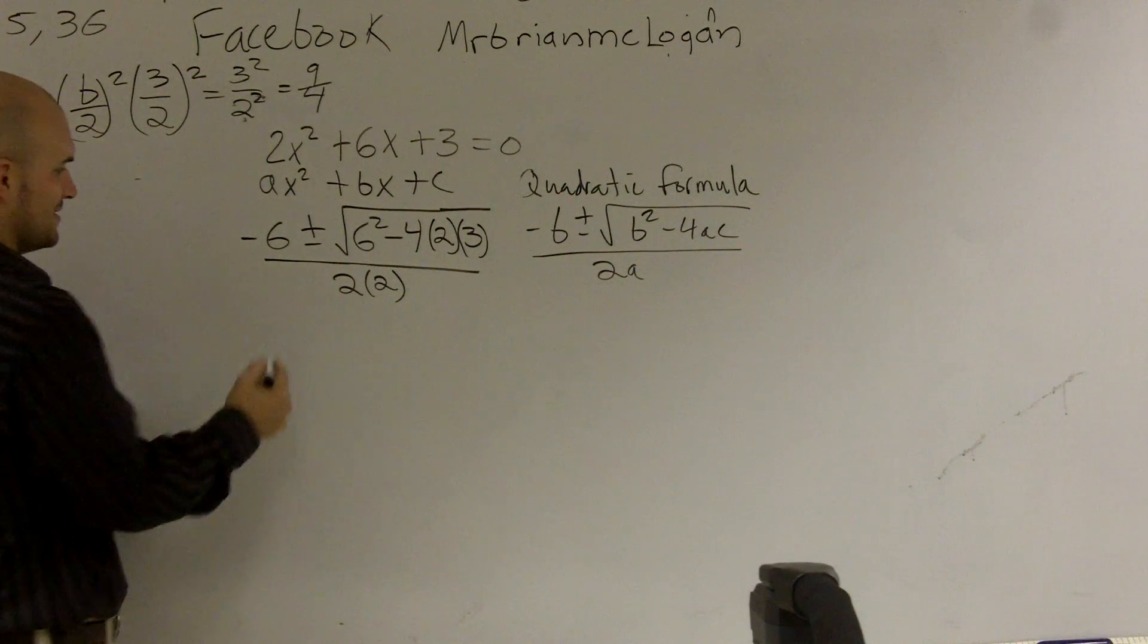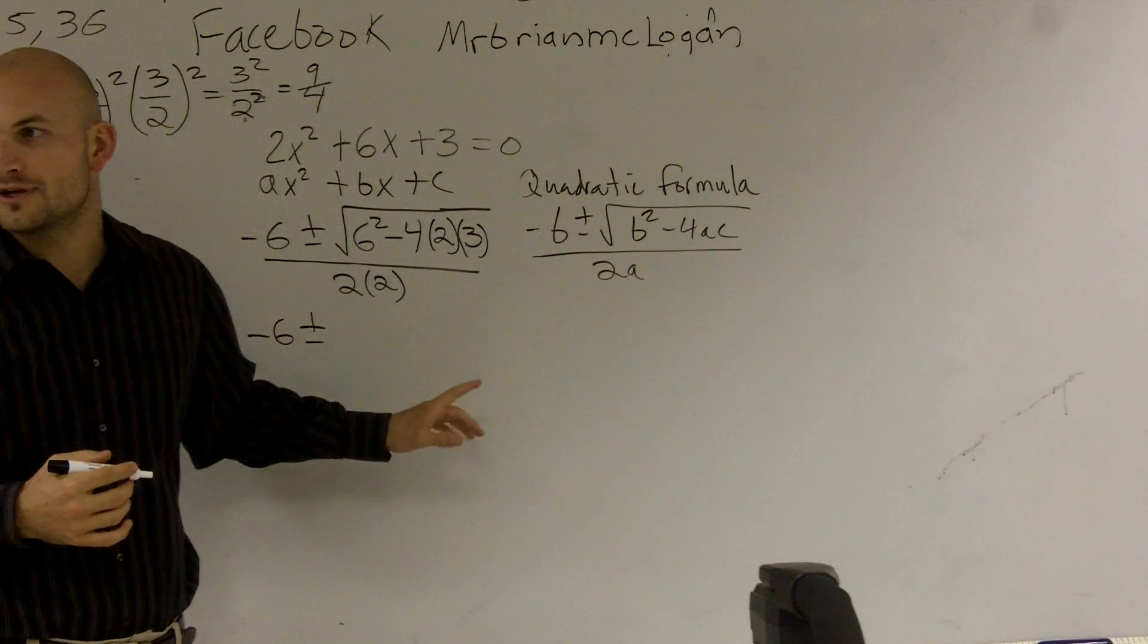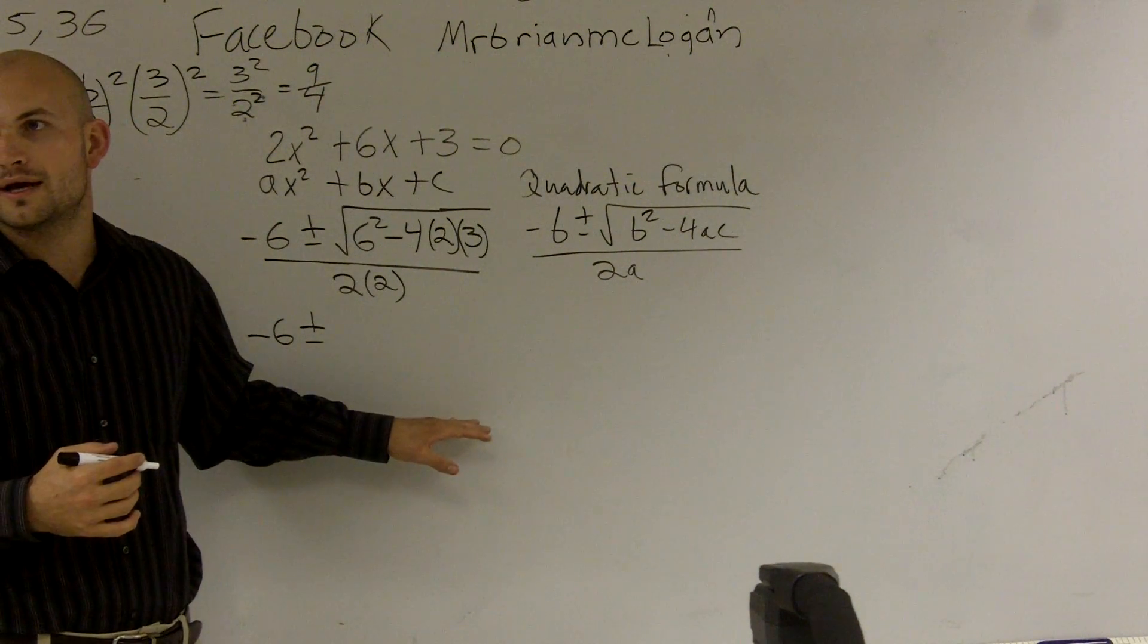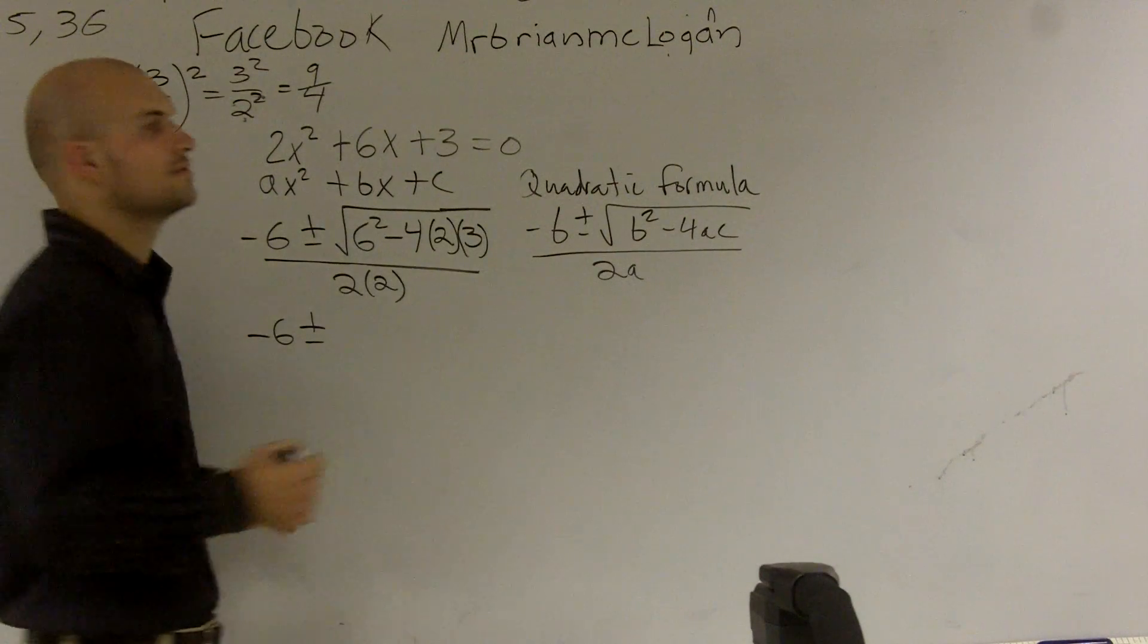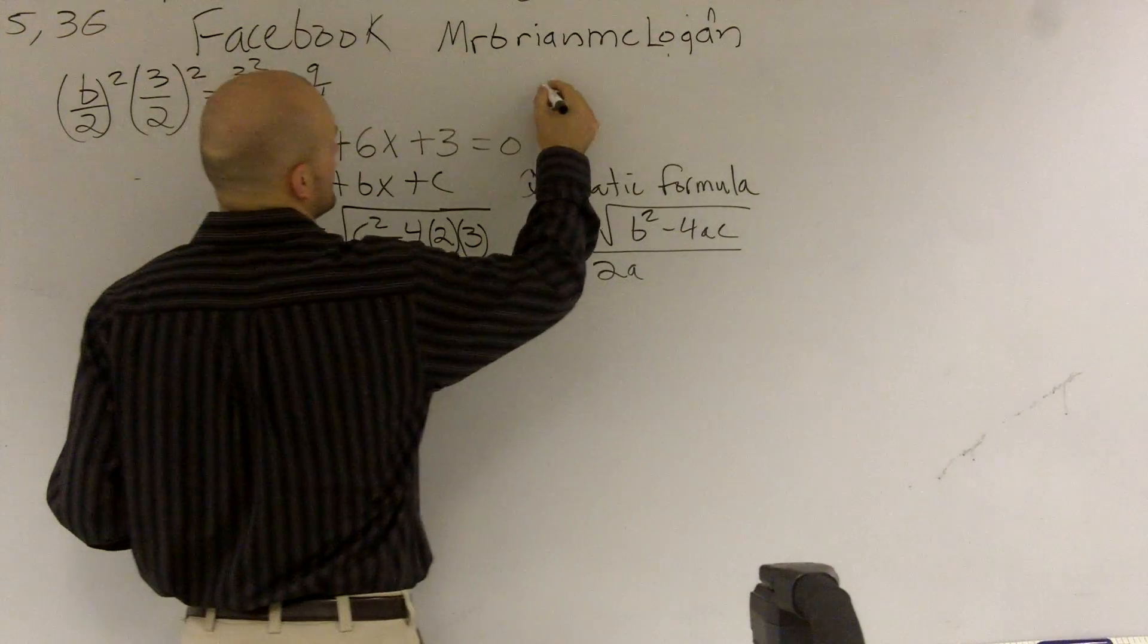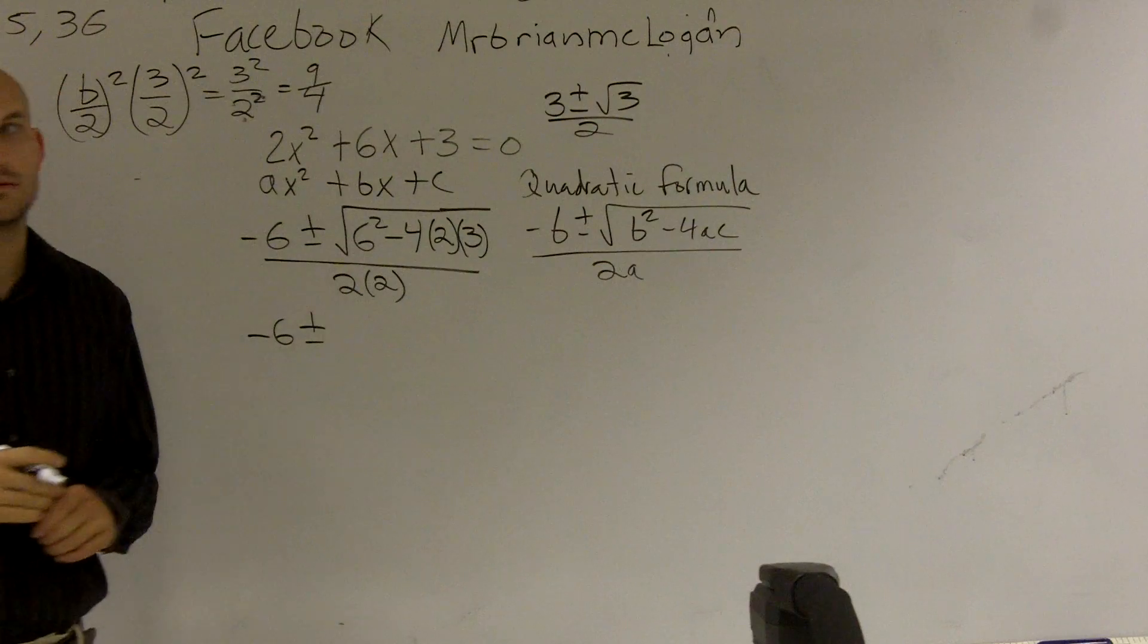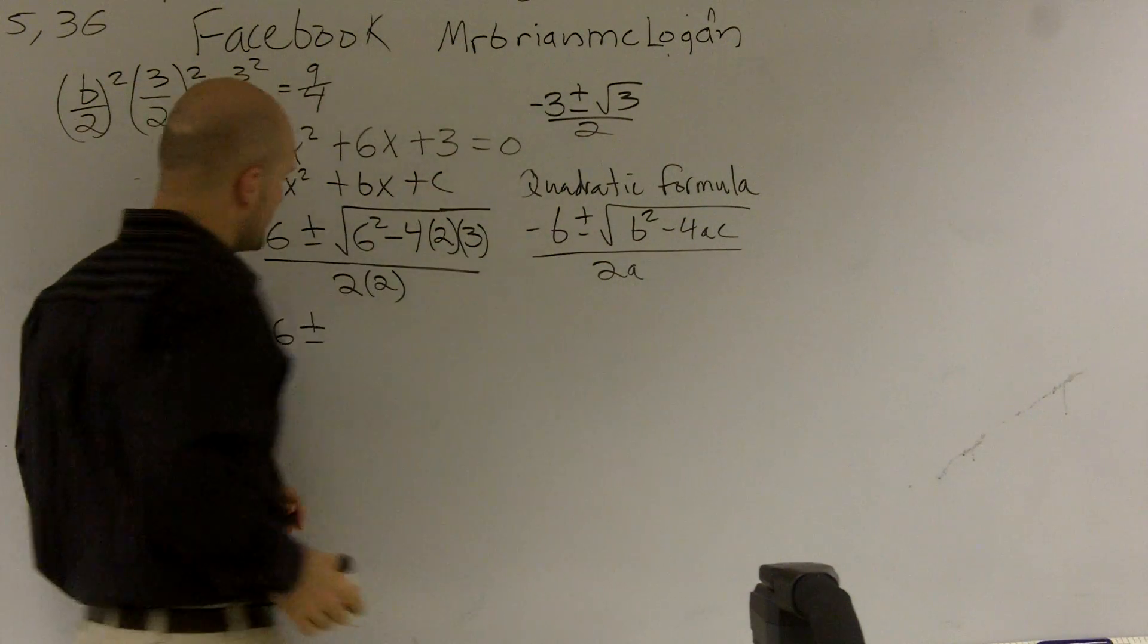All right. So therefore, let's see. Actually, do you guys remember what was the answer for the other problem? Oh no, just one person, yes. Negative 3 plus or minus the square root of 3 all over 2. I thought it was negative 3. That was amazing. OK.